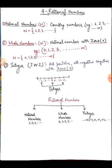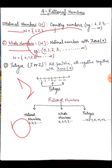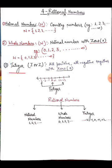Rational numbers totally depend on some foundational number types. The first is the natural number — the counting numbers, which start from one. When we include zero in the set of natural numbers, it is called the whole number. The next important number type is the integer.